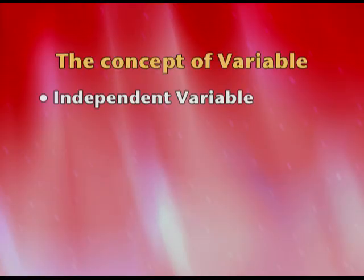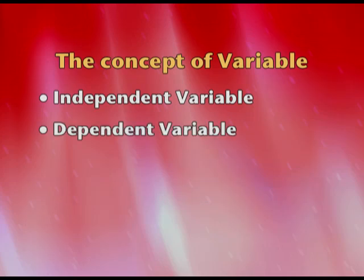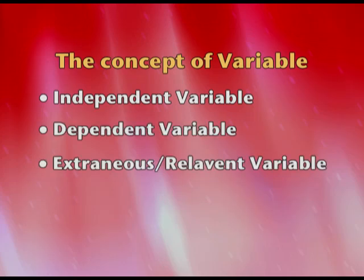The three kinds of variables are: independent variable, dependent variable, and extraneous variable. The purpose of research is basically to enhance the effect of the independent variable on the dependent variable and to reduce the third one, which is the extraneous variable.